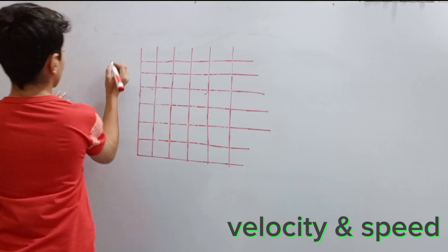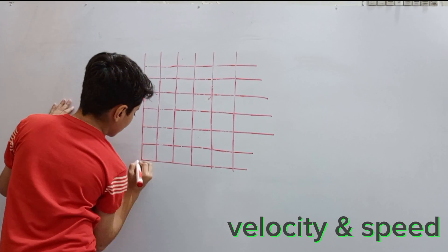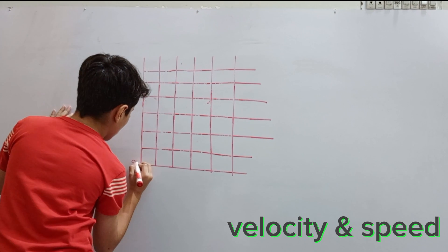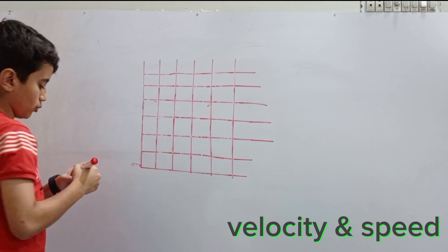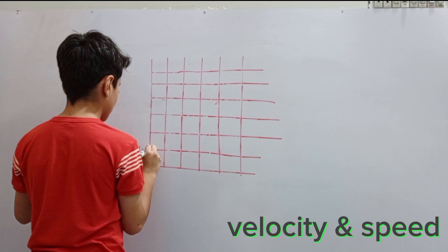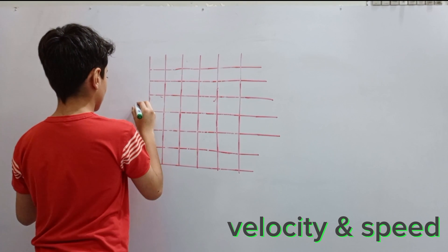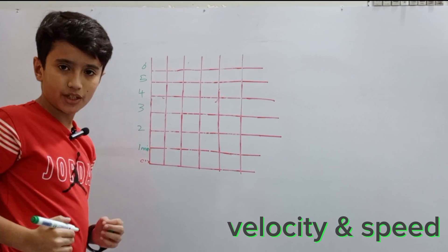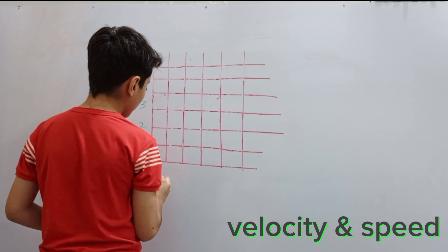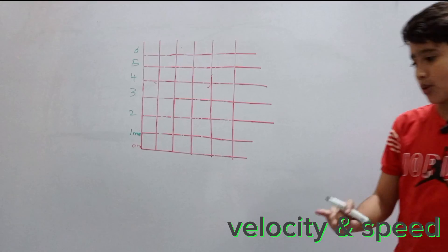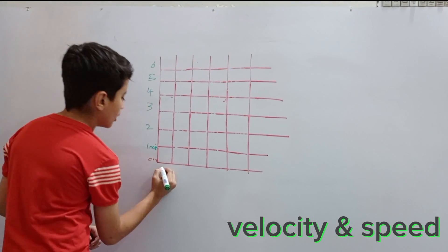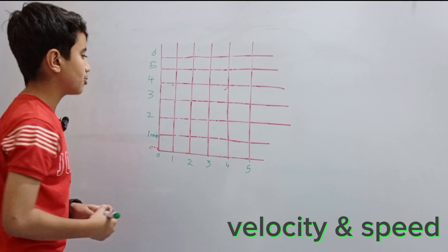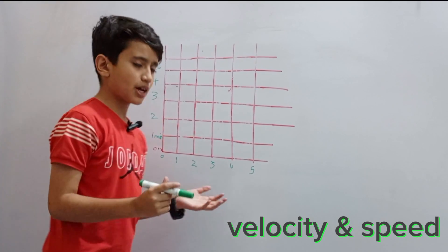We don't need the ruler anymore. So on our graph, we have zero minutes here, and we're going to have time along this axis: one minute, two, three, four, five, six — you can go up to ten minutes. And here we have velocity, or the speed we're going. We'll label it zero meters, one meter, two meters, three meters, four meters, and five meters.